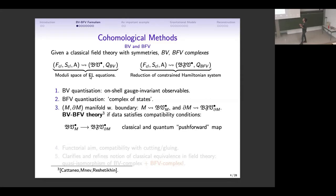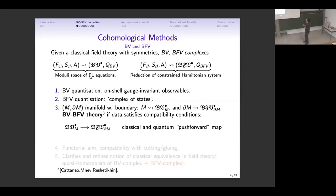If you are on a manifold with boundary, you can associate a BV complex to your bulk and a BFV complex to the boundary. You say that you have a BV-BFV theory if the data satisfies certain compatibility conditions — inside this relation between what you associate to the bulk and what you associate to the boundary, there are both classical and quantum relations. The broader motivation, perhaps more in mathematical circles, is that we want to think of quantization as a functor between two categories.